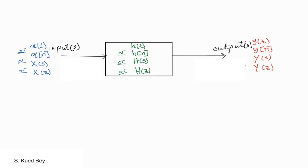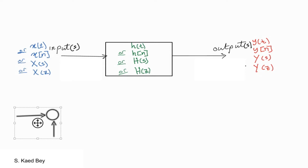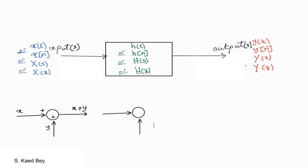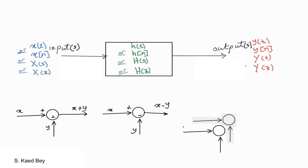In addition to using blocks to represent subsystems, small circles are used to represent the operations of addition and subtraction. These are called summing points, with an appropriate plus or minus sign associated with the arrows entering the circle. The output is the algebraic sum of the inputs, and any number of inputs may enter a summing point.